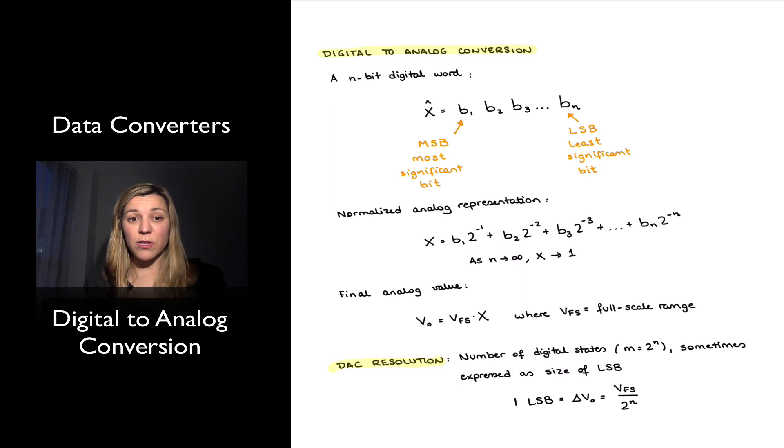And just as we have talked about the resolution for an A to D converter, we can also talk about the resolution as being one of the performance parameters for a DAC, or a digital to analog converter. And resolution also refers to the number of digital states available. So basically, 2 to the n, where n is the number of bits in our system.